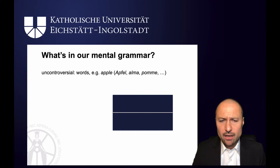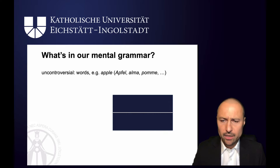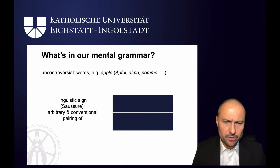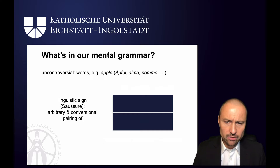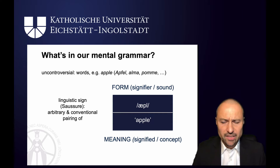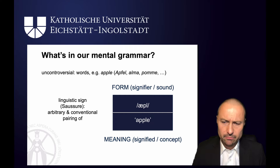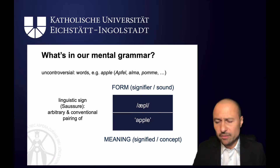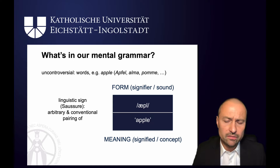So what is in our mental grammar? An uncontroversial element are words — words like 'apple', which in German is Apfel, in Hungarian Alma, and in French Pomme. As you may remember, the Saussurean definition of a word is a symbol, a linguistic sign: an arbitrary pairing that must be conventional of form and meaning. Form stands for the signifier or sound — so for English 'apple', we've got A-P-L — and that is linked to a concept, a signified, the meaning of this symbol. What we mean by this is, of course, the concept that underlies it, which for you might include the shape of an apple, what it tastes like, what it looks like, where you can find it, how it grows. So encyclopedic knowledge about the meaning of words.